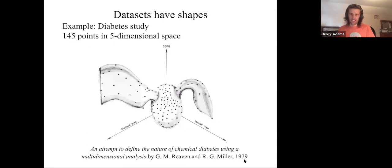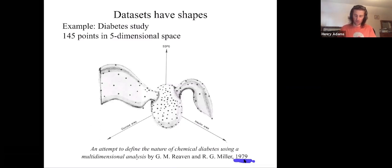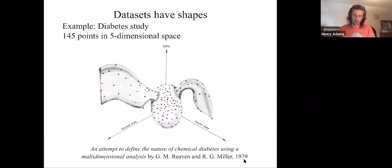First, I want to talk about how you can think of data sets as points in some high-dimensional space. I'm going to use a very old example — an old data set from the late 1970s. They had 145 patients who came in, and from each patient they measured five physical characteristics.